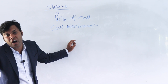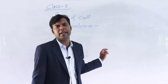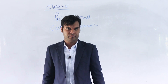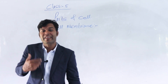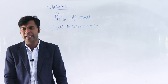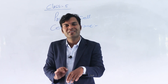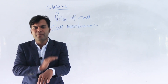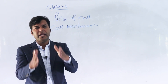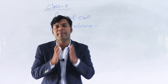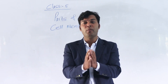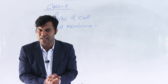Comparing to our body: our skin is like the cell membrane of a cell. Just as skin covers the whole body, in the case of a cell, the cell membrane covers the whole parts of a cell. The part that surrounds the cell is called the cell membrane. Clear?